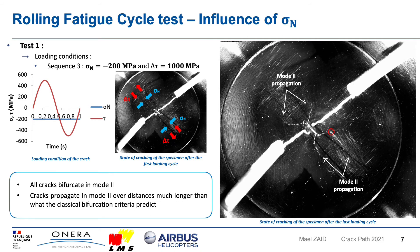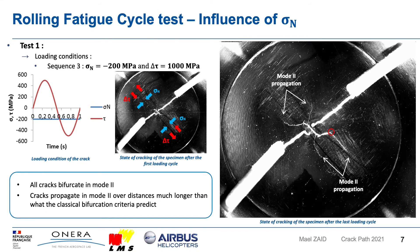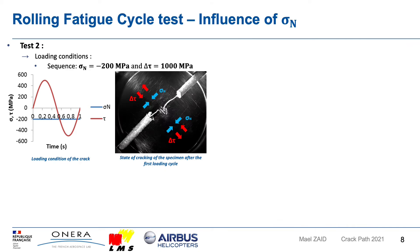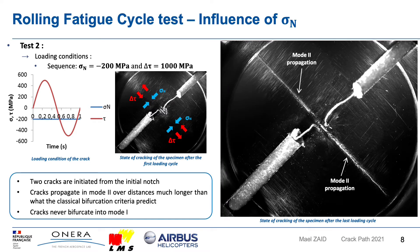By slightly reducing the normal stress and increasing the amplitude of the cyclic shear stress, the four cracks bifurcate in shear mode and propagate in pure mode 2 over longer distances than what the classical bifurcation criteria predict. Consequently, the normal stress prevents mode 1 propagation, which promotes coplanar crack growth when the shear stress is high enough. A second test was performed to confirm this observation, applying the same loading conditions that allowed shear mode propagation in the previous test. Two cracks initiated from the initial notch propagated in pure mode 2 over longer distances than classical bifurcation criteria predict, illustrating the influence of normal stress on the ability to propagate a stable crack in shear mode without bifurcating in mode 1.